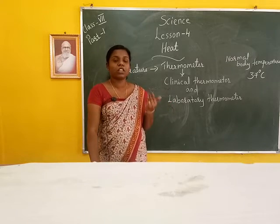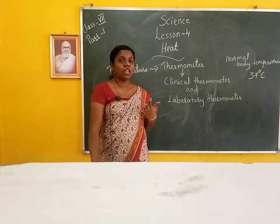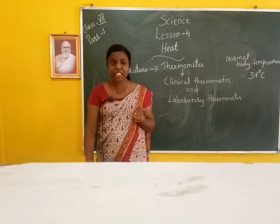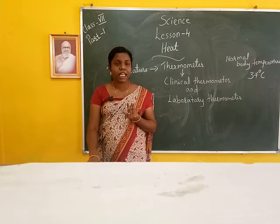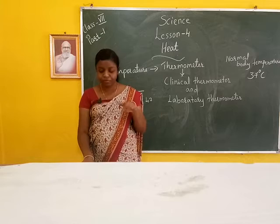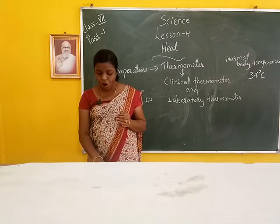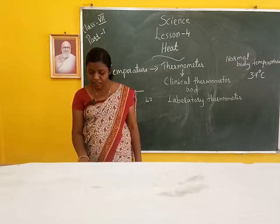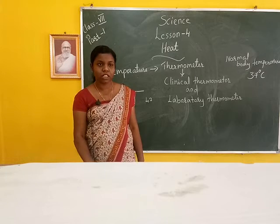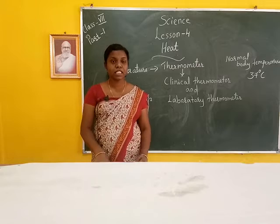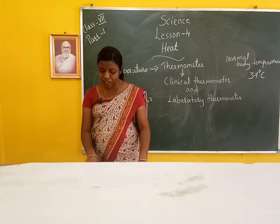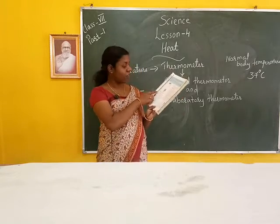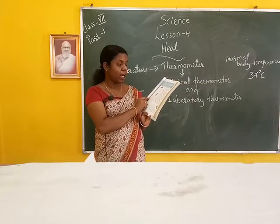Compared to the clinical thermometer range of 35 to 42 degrees Celsius, the laboratory thermometer has a range of minus 10 to 110 degrees Celsius. This range determines the least count of the thermometer — how small a degree can be measured on it accurately. Refer to figure 4.5 — it is a picture of a laboratory thermometer.